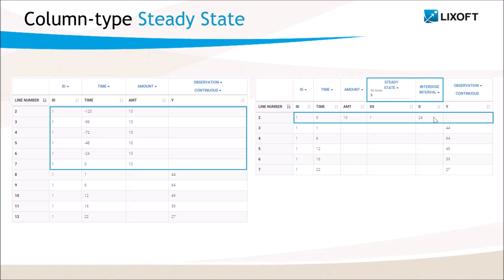Note that there can be only one column with the type steady state in the data set, as well as only one column additional doses. Both columns should always be combined with a column of the type interdose interval.